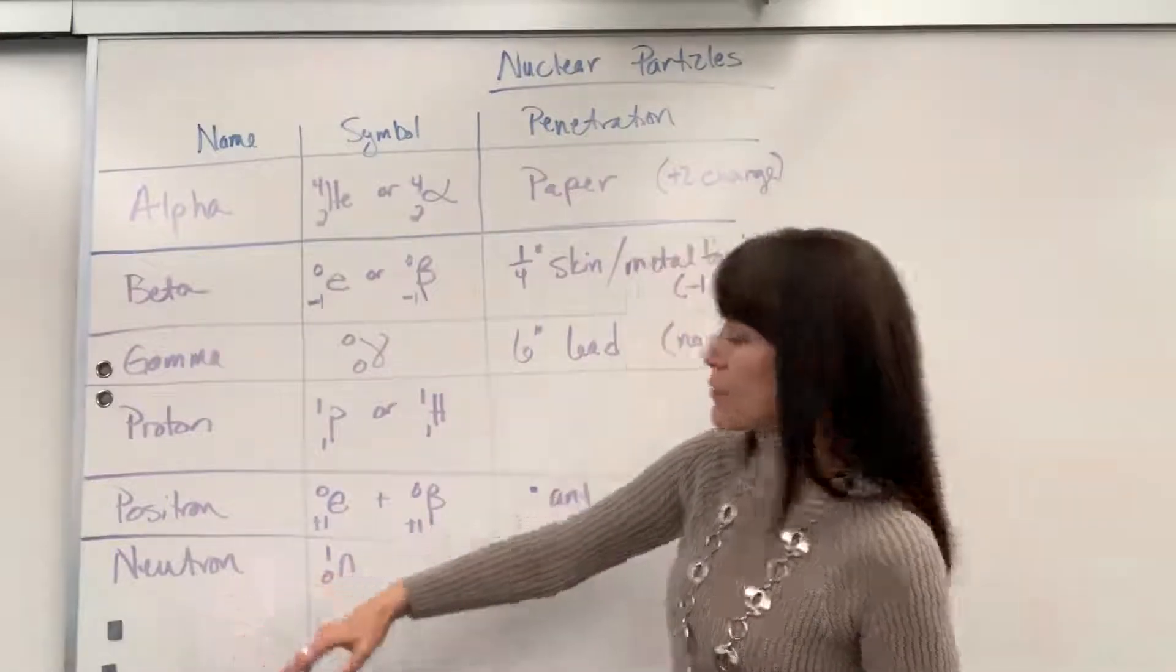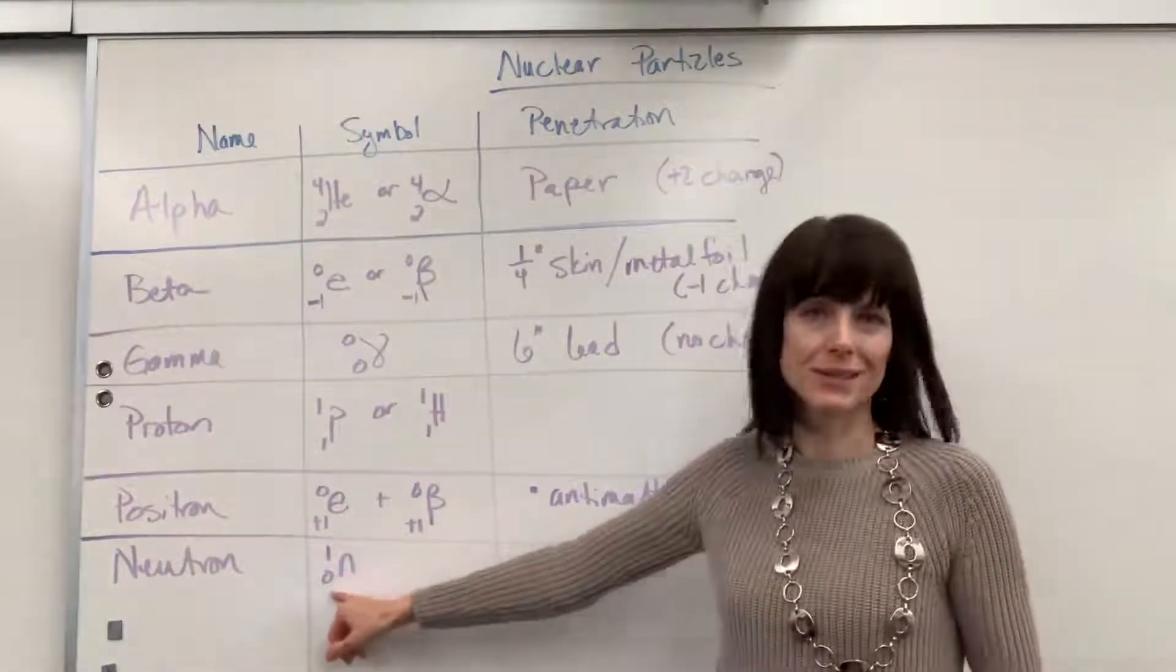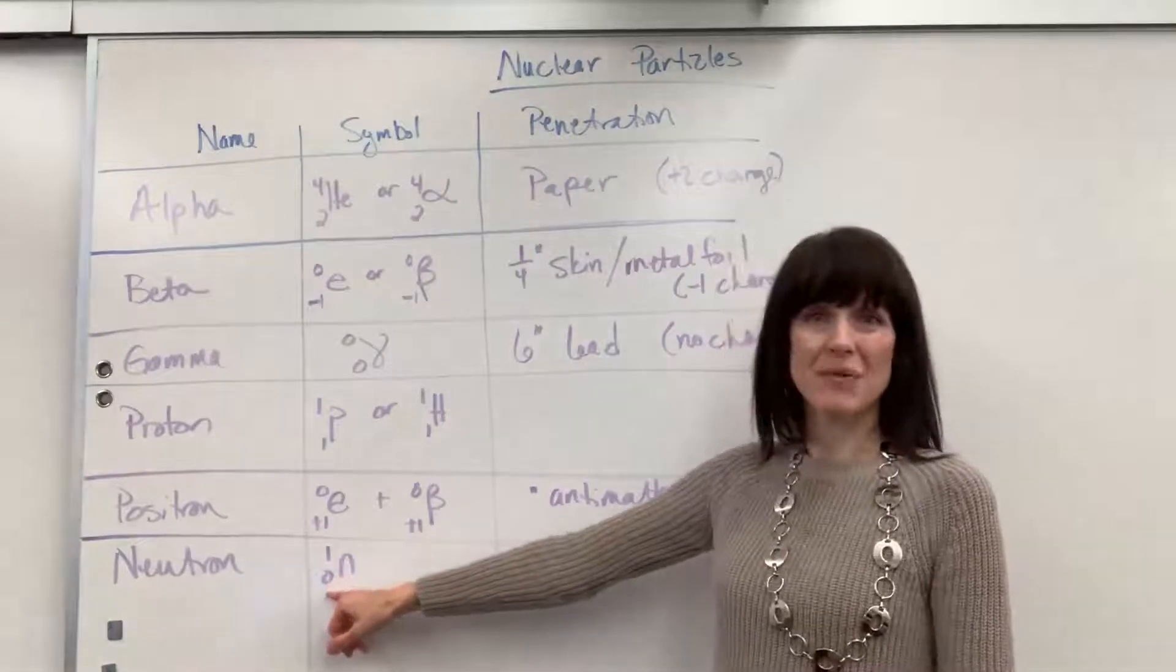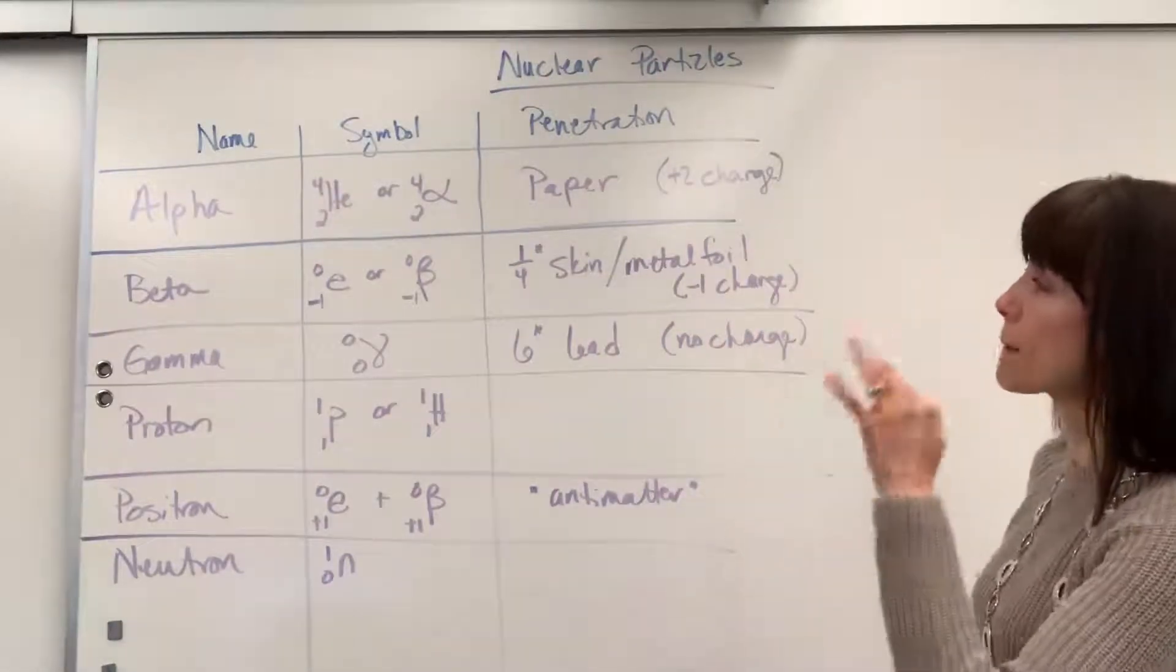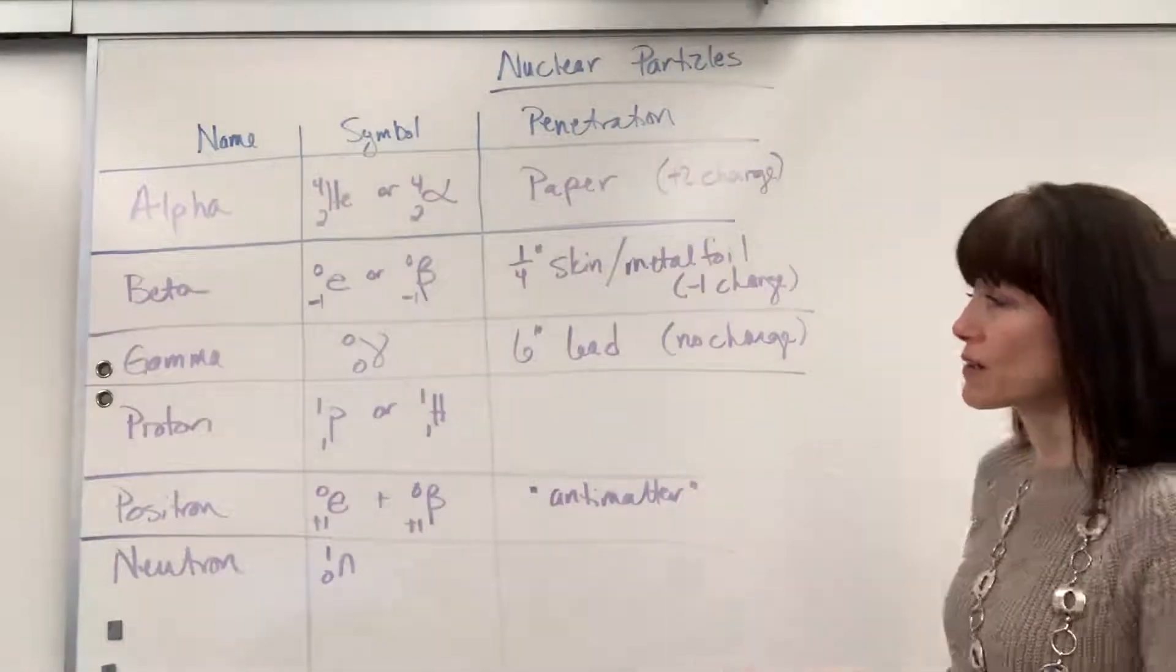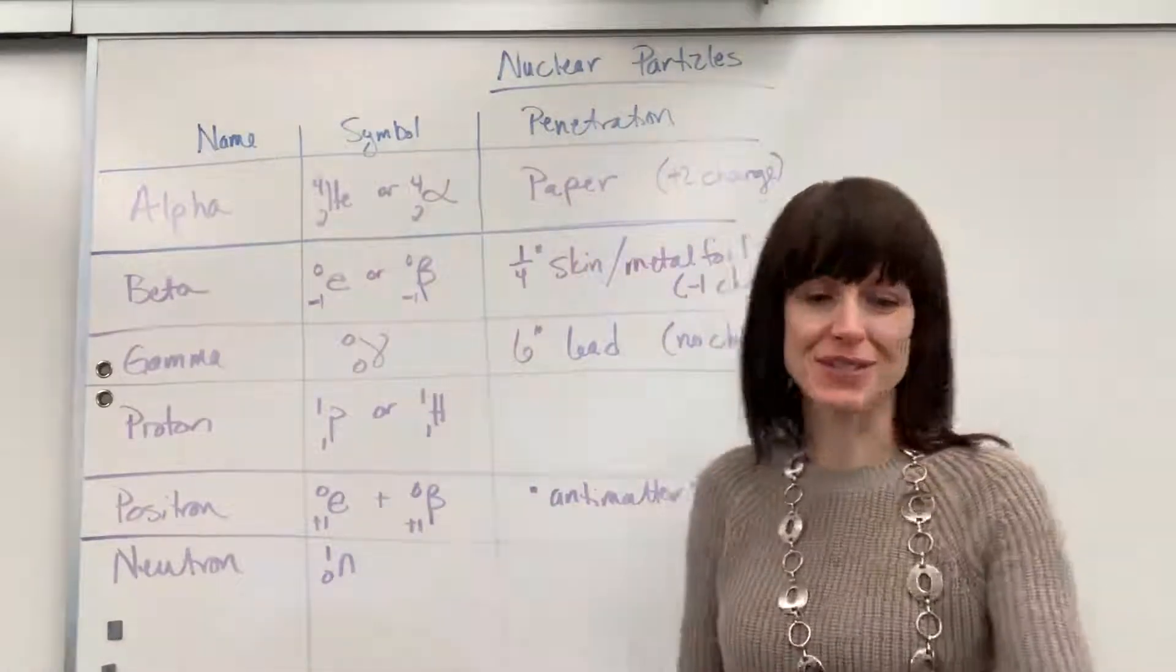A neutron. How we represent a neutron, of course, it has no protons. So it's going to be a zero for the atomic number and then it will have a mass of one. So our basic nuclear particles that you're going to use in a first-year chemistry class.